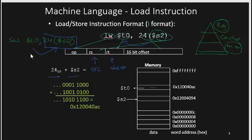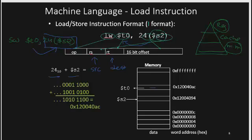For the store instruction, it's the opposite operation. Whatever is stored in $t0 will be stored at the address obtained by adding offset 24 and register $s2. Adding these gives the address of the memory location where the contents of $t0 will be written. That's how the load and store instruction works.